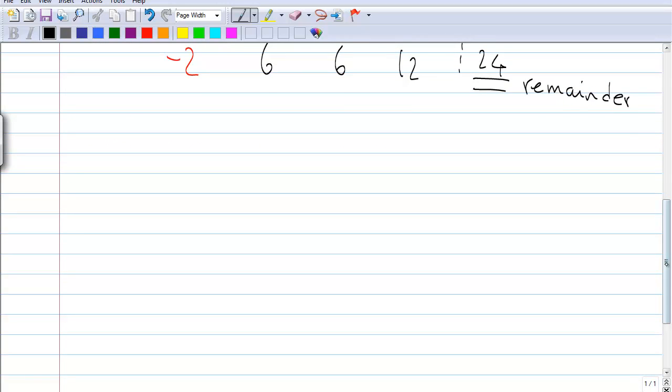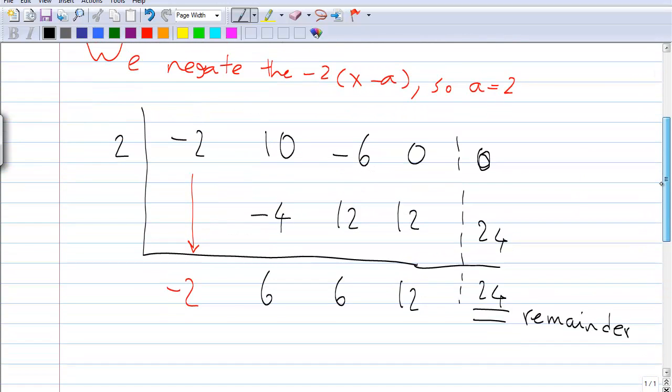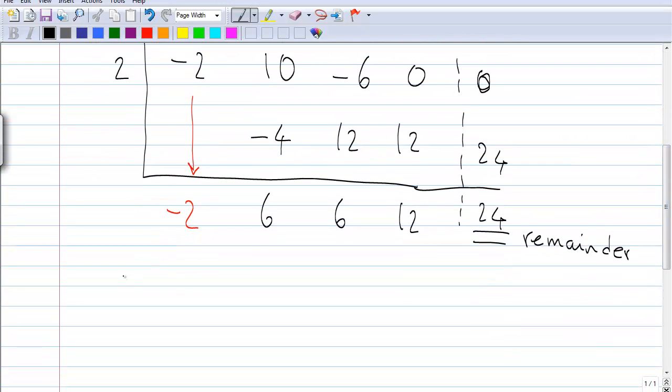Let's write our division statement: -2x³ + 6x² + 6x + 12, and our remainder is 24, so we write plus 24.